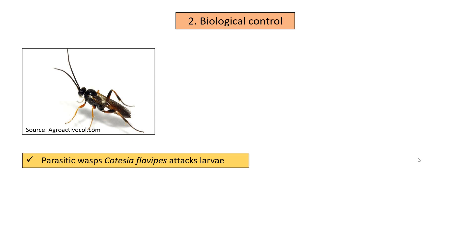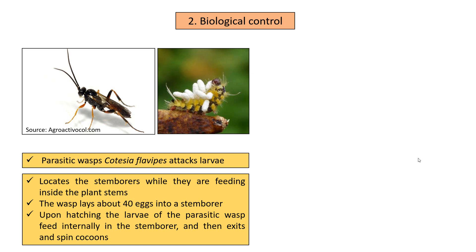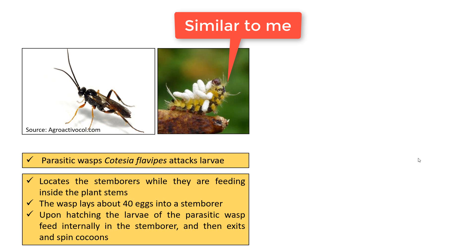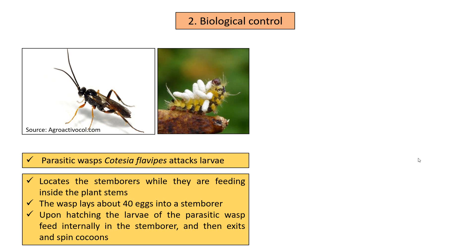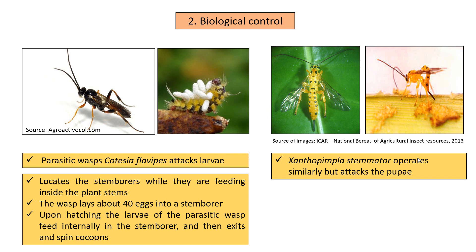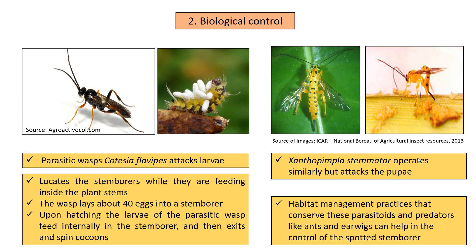Biological control: Stem borers can also be controlled by promoting parasitic wasps such as Cotesia flavipes, which attacks the larval stage of the pest. It locates stem borers while they are feeding inside the plant's stems. The wasp lays about 40 eggs into a stem borer; the hatching larvae of the parasitic wasp feed internally in the stem borer, then exit and spin cocoons. Synapanteles similarly attacks the larval stage, while Xanthopimpla stemmator operates similarly but attacks the pupa. Habitat management practices that conserve these parasitoids and predators like ants and earwigs can also help in control.